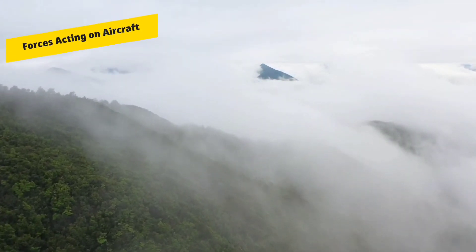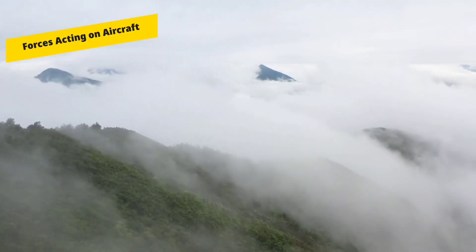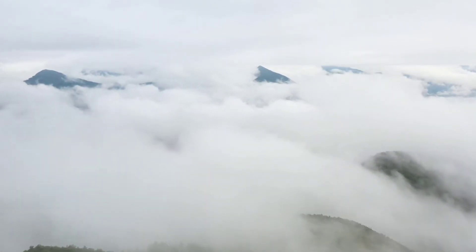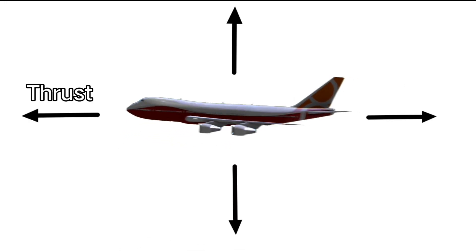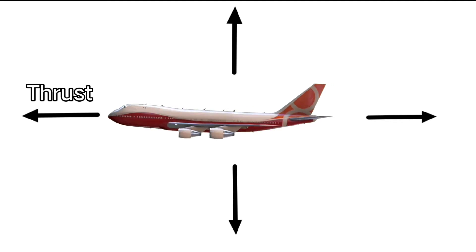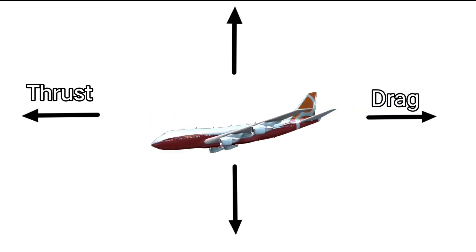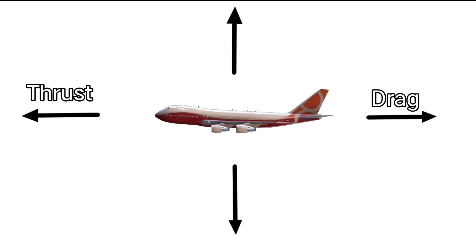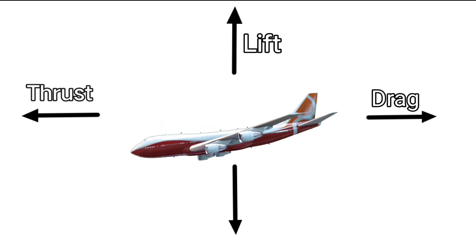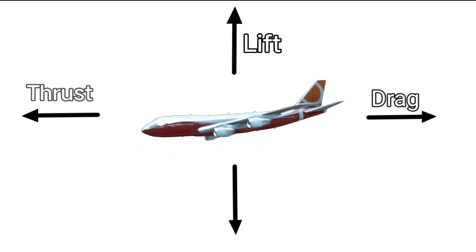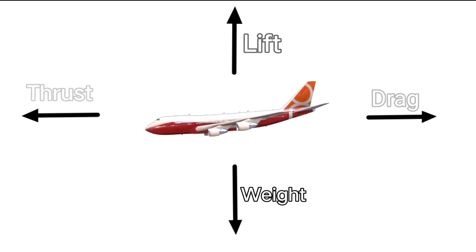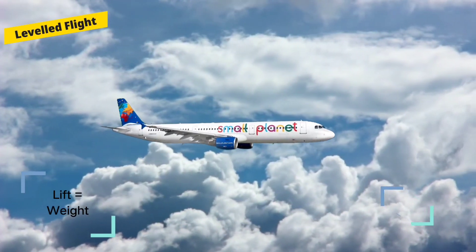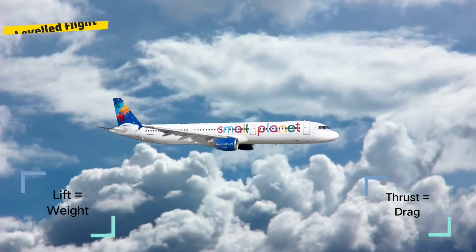Now let's discuss the forces acting on flight. They are thrust, lift, drag, and weight. Thrust is the forward force required for movement of flight. Drag is the opposing force to thrust; it is caused by friction and due to disturbance in air. Lift is the force acting upward and weight is the force acting opposite to it.